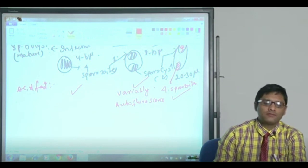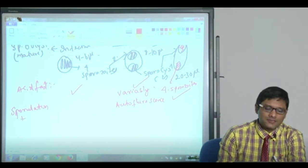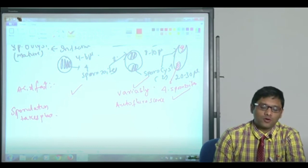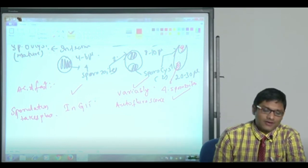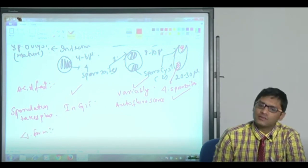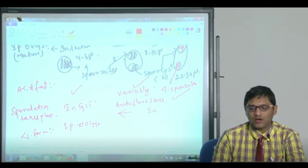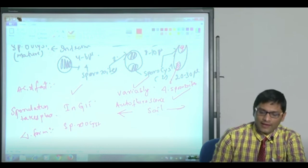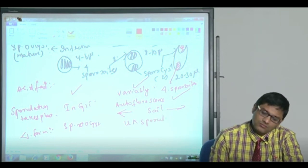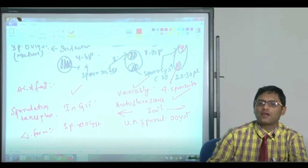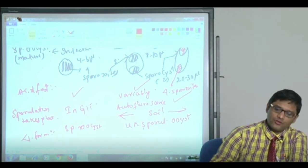Then, where does the sporulation take place? They say that for Cryptosporidium, sporulation takes place inside GIT also, inside the GIT. That is why the diagnostic form is sporulated oocyst. Whereas for the other two, the sporulation takes place in soil environment, so the diagnostic form is unsporulated oocyst. That is what is released in feces. That will become sporulated in the environment. And which is the infective form? Sporulated oocyst.